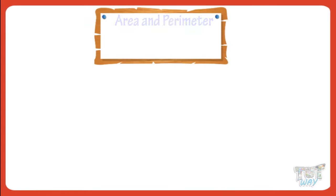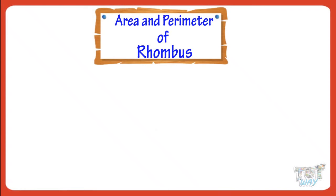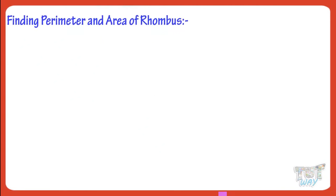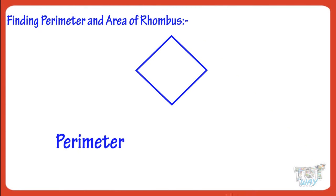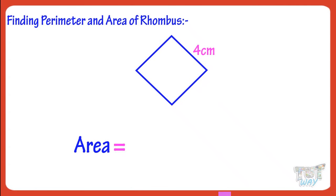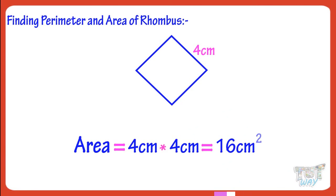Now, let's learn finding area and parameter of a rhombus. This is a rhombus shape. A rhombus also has all sides equal. So, finding parameter and area of rhombus is just the same as we did for square. Parameter of rhombus with side 8 cm will be 8 multiplied by 4, which equals 32 cm. So, parameter of rhombus with side 8 cm is 32 cm. Finding area and parameter in case of a rhombus is same as we find in a square.